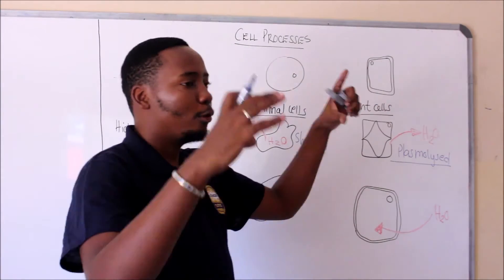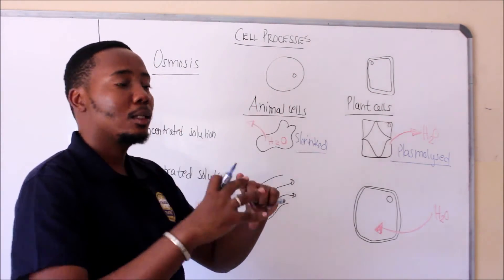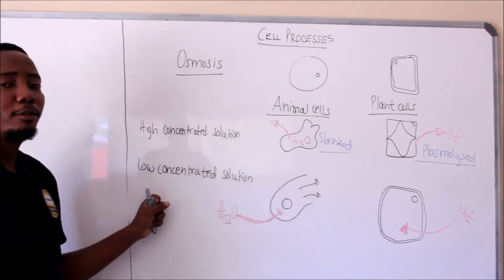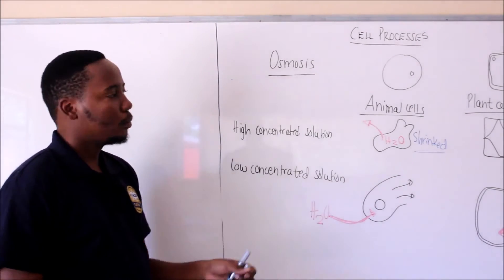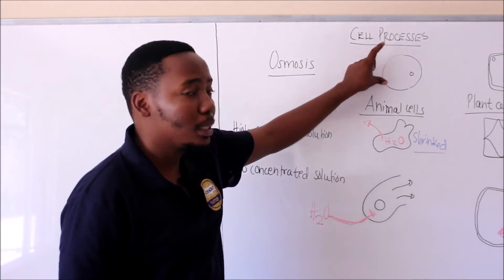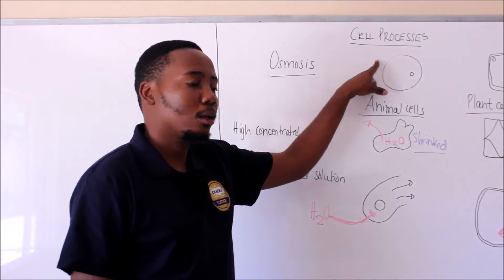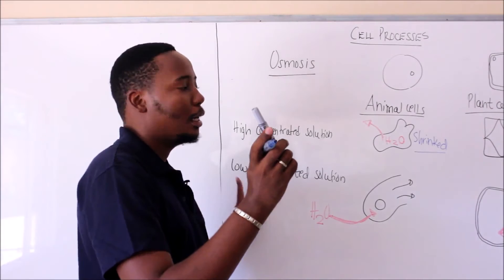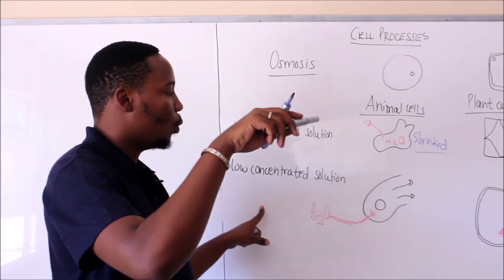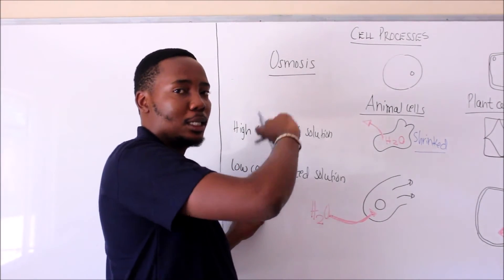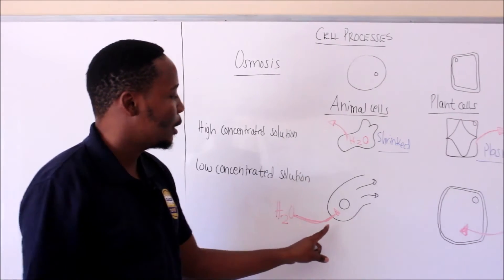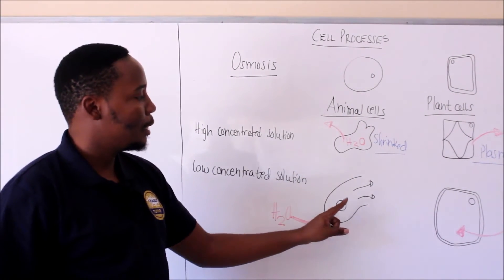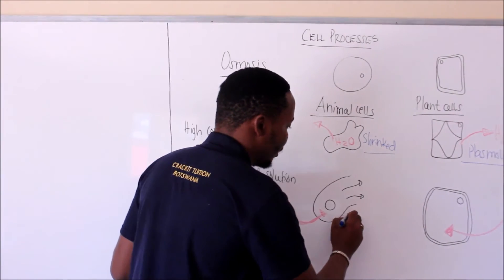Because the plant cell has lost water, the volume reduces and the pressure inside the cell also reduces — that's when you end up with a plasmolyzed cell. Now let's look at what happens when we put the same cells in a low concentrated solution. The low concentrated solution has a high water potential, so water molecules move from the solution where their concentration is high into the cell. As they move in, they raise the pressure against the cell membrane, and finally the animal cell is going to burst.